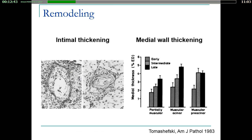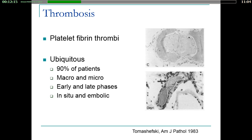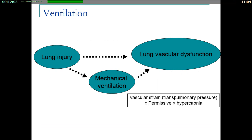The second phenomenon is remodeling. There is a lot of intimal thickening within the media of the small pulmonary arteries, and also a degree of occlusion compared to a normal adult, with deeper obliteration of small vessels seen using CT angiography in deceased patients with early ARDS. This occlusion is due to thrombosis with platelet fibrin thrombi, seen in almost all patients with ARDS, in small and large vessels, and in all phases of ARDS.